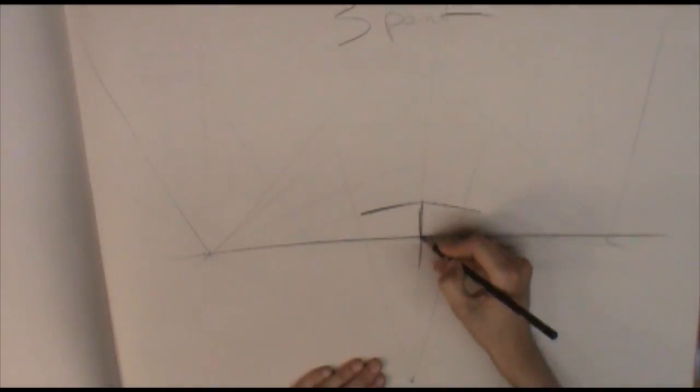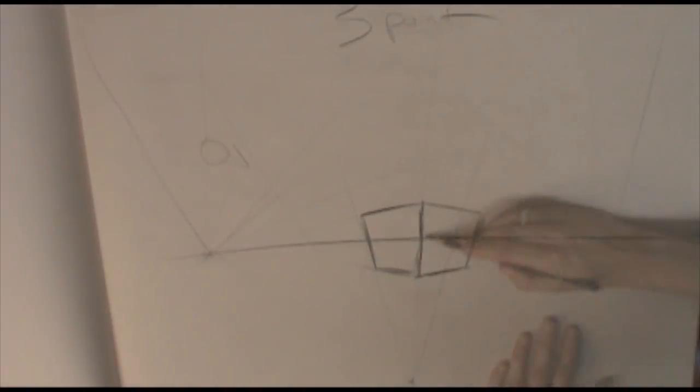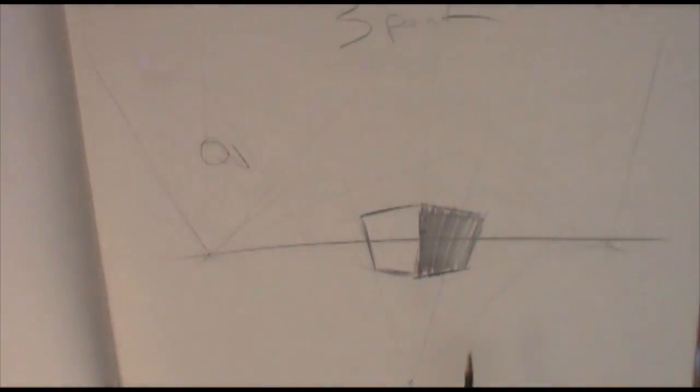Another common choice is three point perspective, which mimics a true 3D space by essentially creating an X, a Y, and a Z axis.